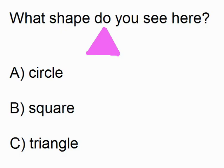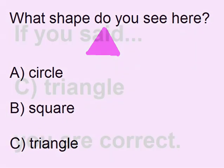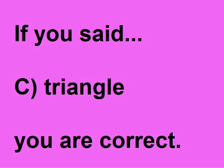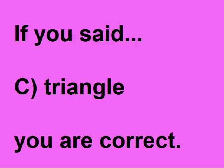What shape do you see here? A circle, B square, C triangle. If you said C triangle, you are correct.